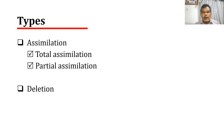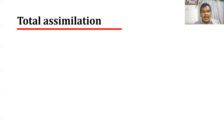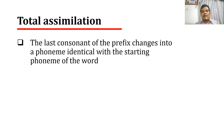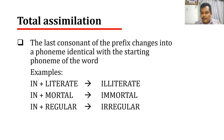Assimilation is further divided into two subtypes. The first one is total assimilation, and the second one is partial assimilation. Total assimilation occurs when the last consonant of the prefix changes into a phoneme which is identical with the starting phoneme of the next word. Here are some examples.